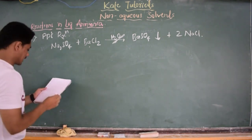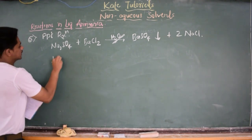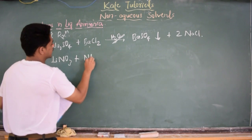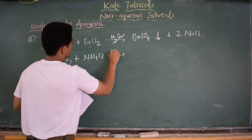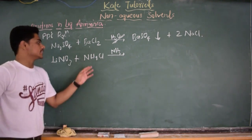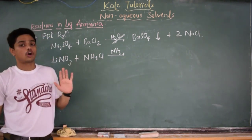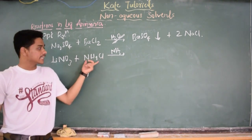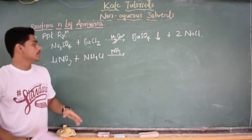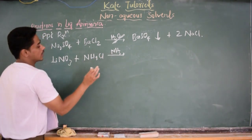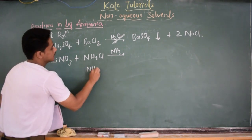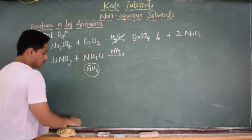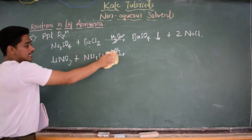But in the case of liquid ammonia, consider LiNO3 — lithium nitrate — when reacted with ammonium chloride, NH4Cl, in liquid ammonia. NH4Cl is not a salt here. NH4Cl is an acid in liquid ammonia, whereas NH4Cl was a salt in H2O medium. Here it is acid because of NH4+, which acts as acid in liquid ammonia.